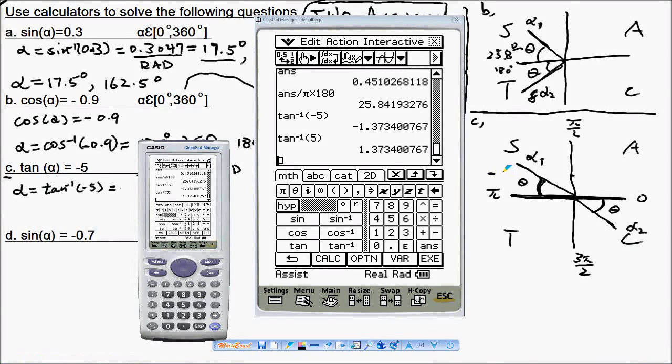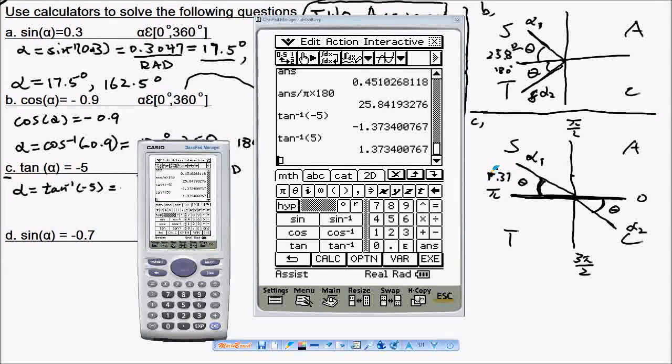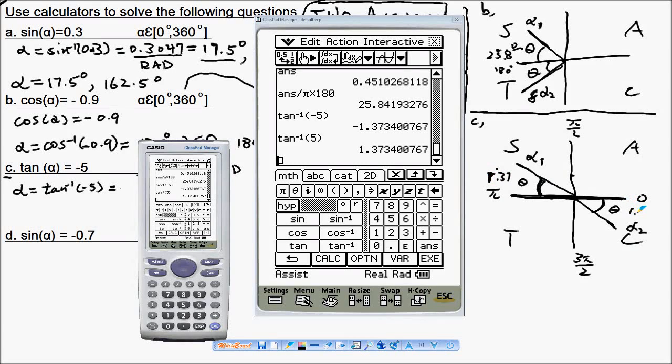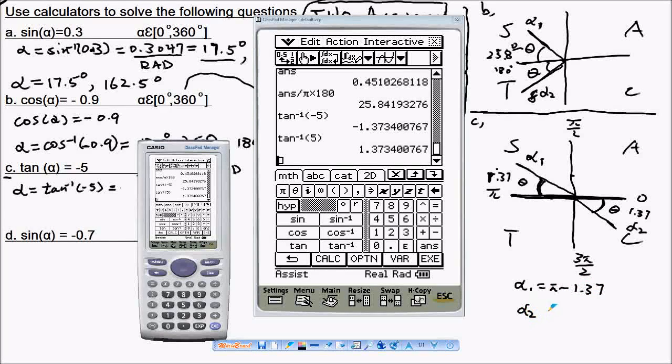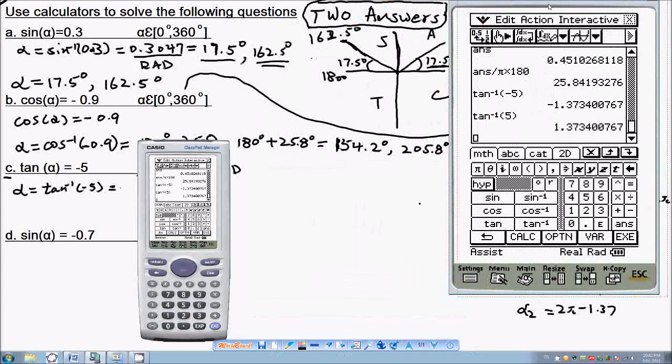It's 1.37 in radians, so alpha one should be pi minus 1.37 and the alpha two is 2pi minus 1.37, because here can be either zero or 2pi. We can move around the circle here, simple stuff.